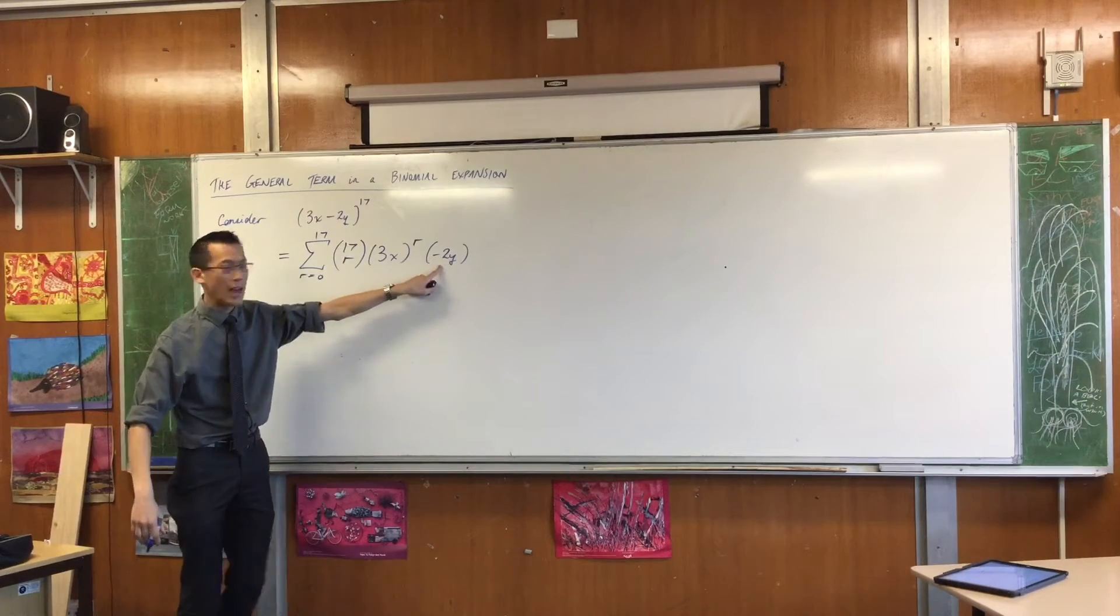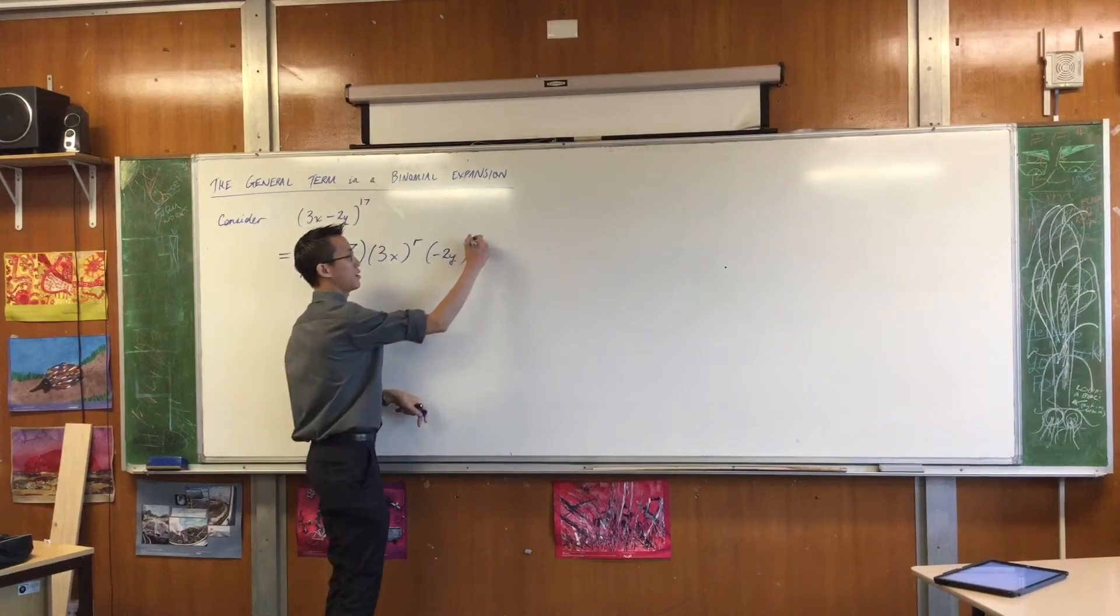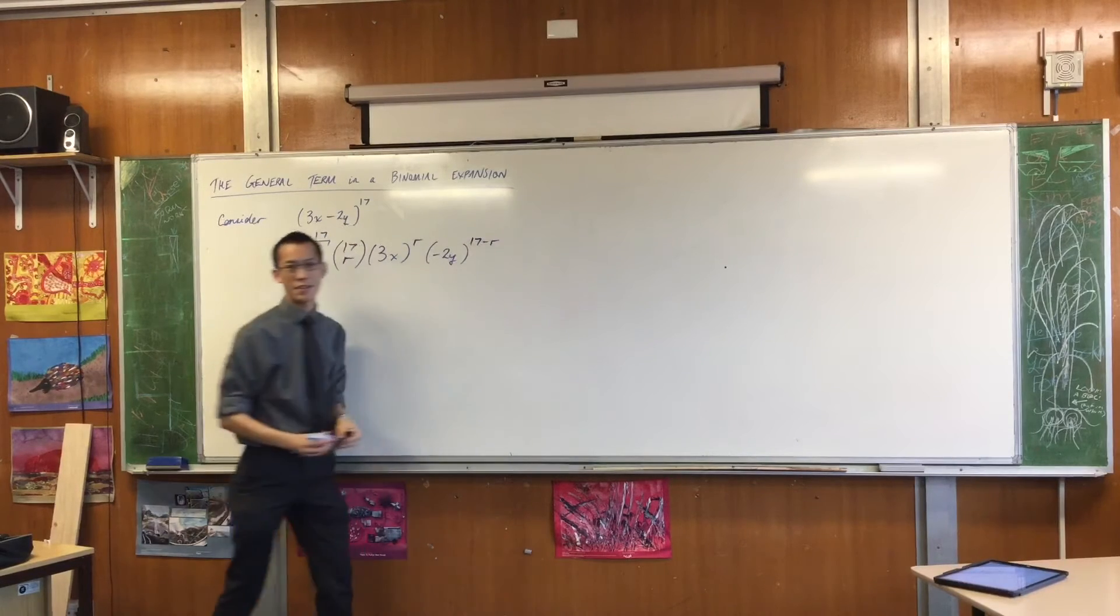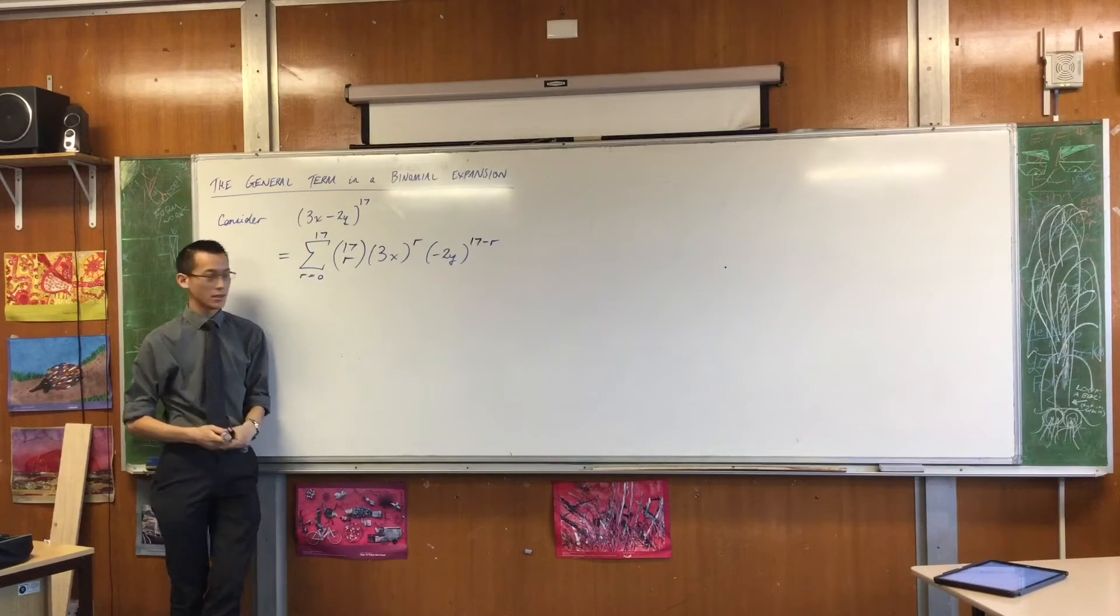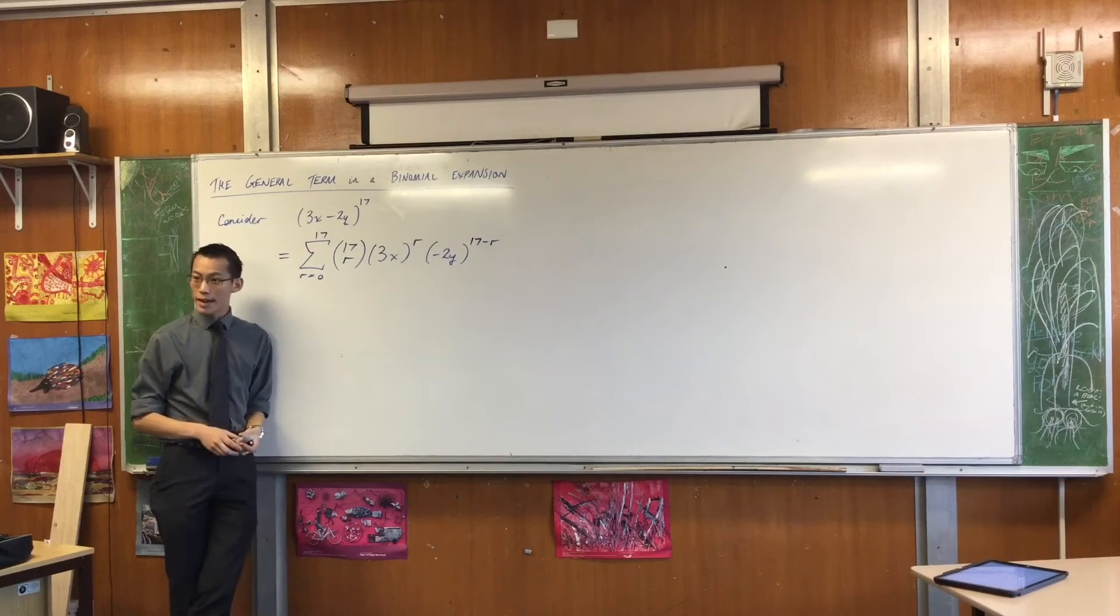Okay, so in total, right, by the end you're going to have something to the power of 17. So your first one, you'll have none of them. And then there'll be one, two, three, and eventually you'll get to the last one. And you'll have that many. Does that make sense?